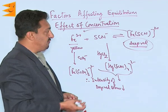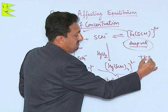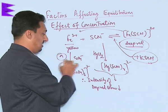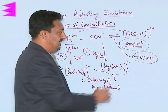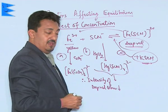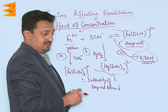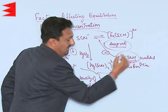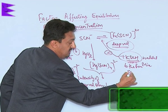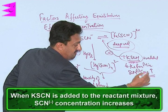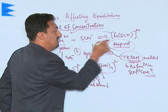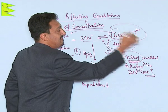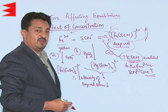On the other hand, if we add some potassium thiocyanate to this reaction mixture, since the thiocyanate ion concentration increases, the system will move in the forward direction. More ferric ions combine with these free thiocyanate ions, and more of the ferric thiocyanate complex is formed. So we have discussed three conditions: addition of oxalic acid, addition of mercuric chloride, and addition of potassium thiocyanate.